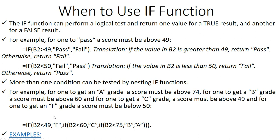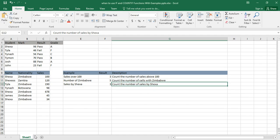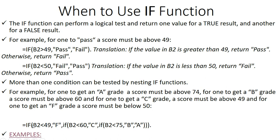By nesting, we mean that inside the outer IF function there exist other IF functions. The outer bracket is closed last, and inside that IF function we have another IF function and yet another. So we have three IF functions total, with two nested IF functions.